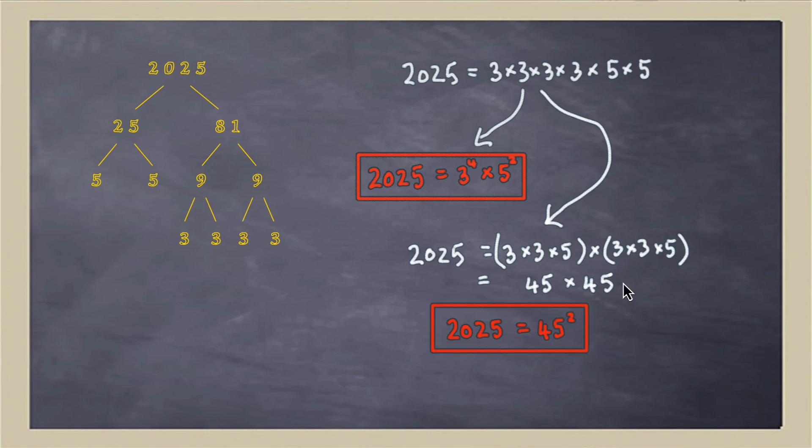And this leads us to a rather interesting development. This is where things get rather exciting, because 45 is a very special number. It's a triangular number. What do I mean by a triangular number? Let me explain that using some diagrams.